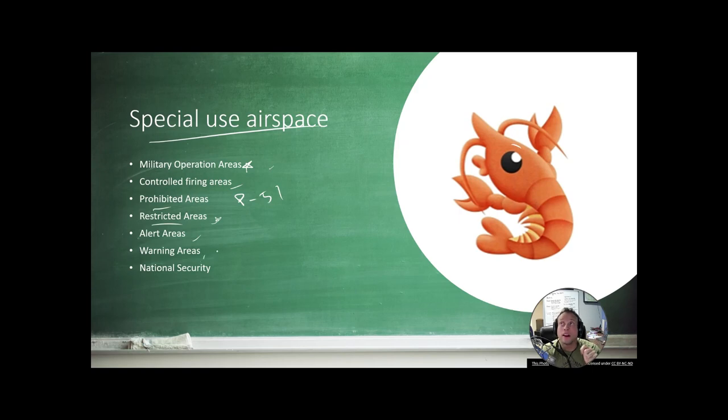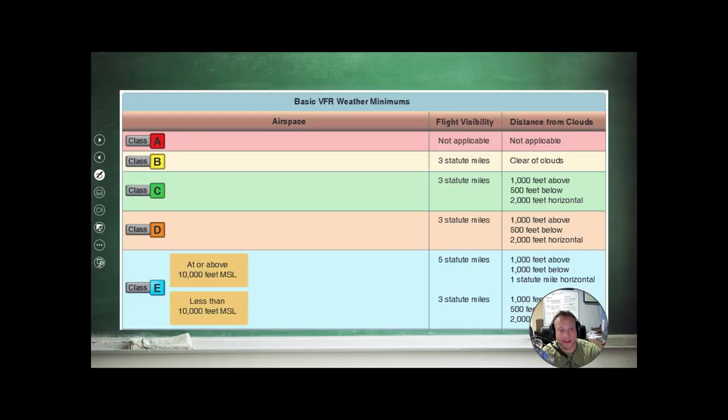And then warning areas. These start at three miles off the coast. And they're just, again, to warn you that there might be some unusual activity in these areas like controlled firing or aerial gunnery. And then there's areas of national security. These are depicted on the charts and they say, for reasons of national security, do not fly over this. There are a couple in our area that correspond to the Naval Air Station and military areas, essentially. But don't fly over national security areas. Again, you're going to have a bad time.